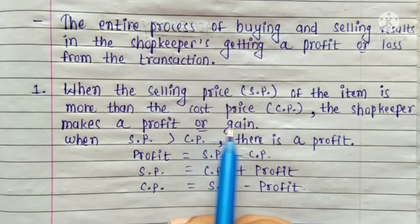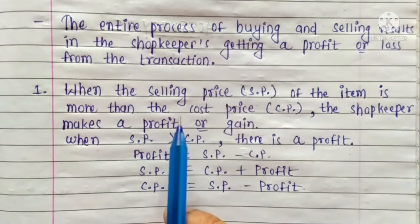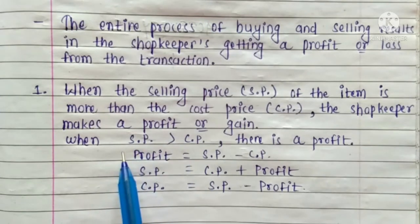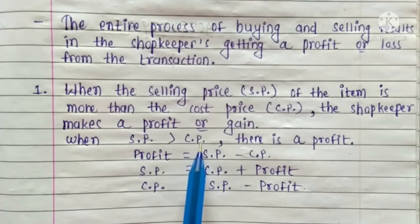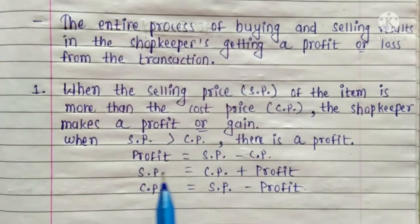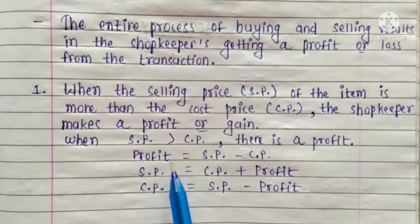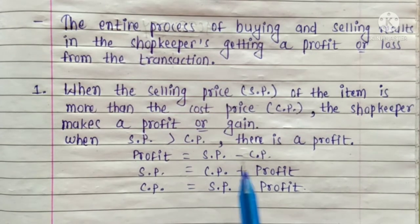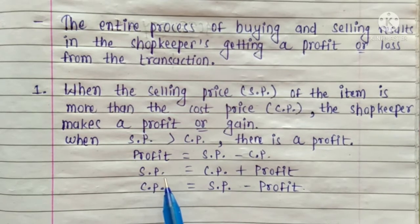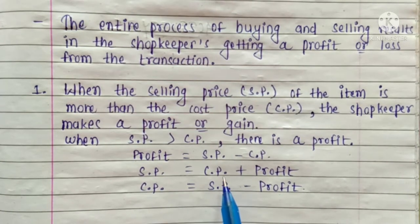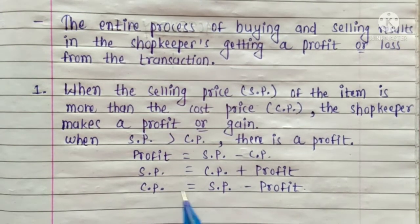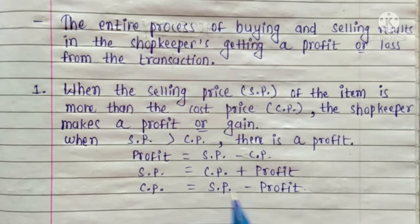To find selling price, we add cost price and profit. To find cost price, we subtract profit from the selling price.